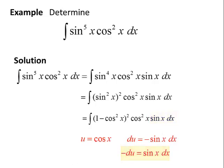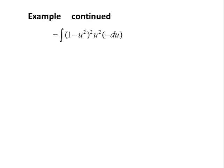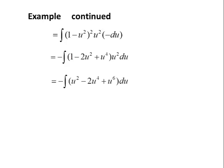Making those substitutions, we have the integral of (1 minus u squared) squared times u squared times negative du. We pull the negative out front of the integral sign and expand (1 minus u squared) squared to get the opposite of the integral of (1 minus 2u squared plus u to the fourth) times u squared du. Then we distribute that u squared, leaving us with integrating negative (u squared minus 2u to the fourth plus u to the sixth) du.